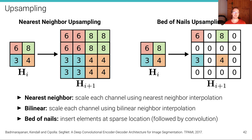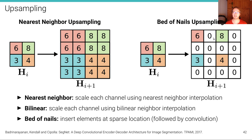There are multiple ways upsampling can be implemented. For instance, we could use nearest neighbor upsampling, where we simply set each element to the nearest neighbor based on the input feature tensor. We can also use bilinear upsampling. Something also very common is bed-of-nails upsampling, where we sparsely insert the values from the input at their corresponding output locations and fill everywhere in between with zeros.